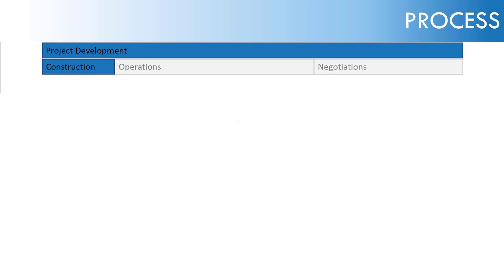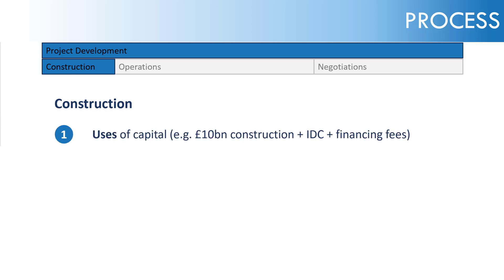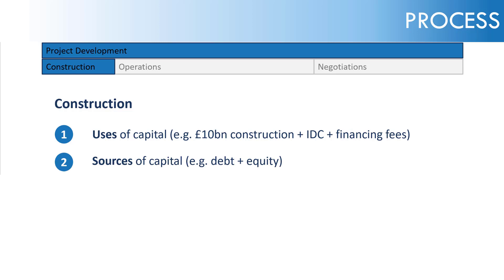Let's talk through the process by which we're going to analyze this. We'll start with construction and look at the uses of capital: 10 billion of construction costs, plus interest during construction, plus financing fees. We're not looking at the interest during construction and financing fees — that's a simplification. Then secondly, we're getting into the sources of capital: debt and equity.